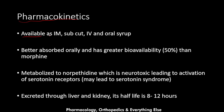Regarding pharmacokinetics: meperidine is available as intramuscular, subcutaneous, intravenous, and oral syrup formulations. It has good oral absorption and greater bioavailability than morphine — pethidine bioavailability is 50% while morphine is 25%. When absorbed through the GI tract into the portal vein, it travels to the liver where it undergoes first-pass metabolism of 50%, leaving 50% bioavailable in circulation.